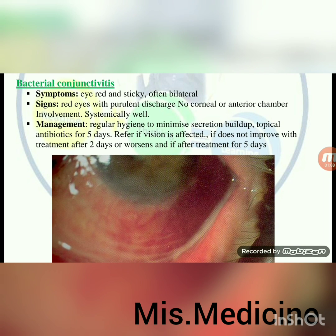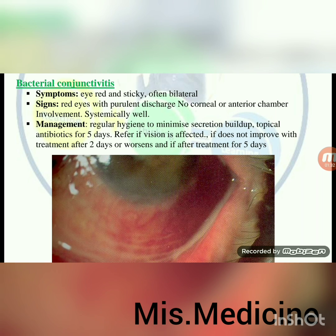Bacterial conjunctivitis — symptoms: eye red and sticky, often bilateral. Signs: red eyes with purulent discharge, no corneal or anterior chamber involvement, systemically well. Management: regular hygiene to minimize secretion build-up; topical antibiotics for 5 days. Refer if vision is affected, if it does not improve after 2 days of treatment, if it worsens, or if not resolved after 5 days of treatment.